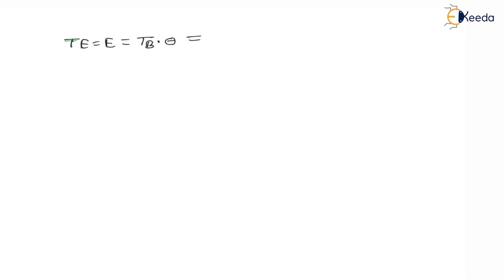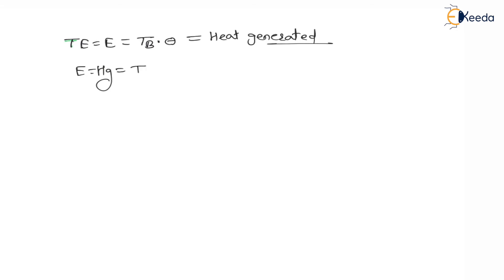When a brake is applied, the total energy in the component is converted into heat energy, and this heat energy is dissipated to the surroundings. Therefore, energy = heat generated = Tb × θ.